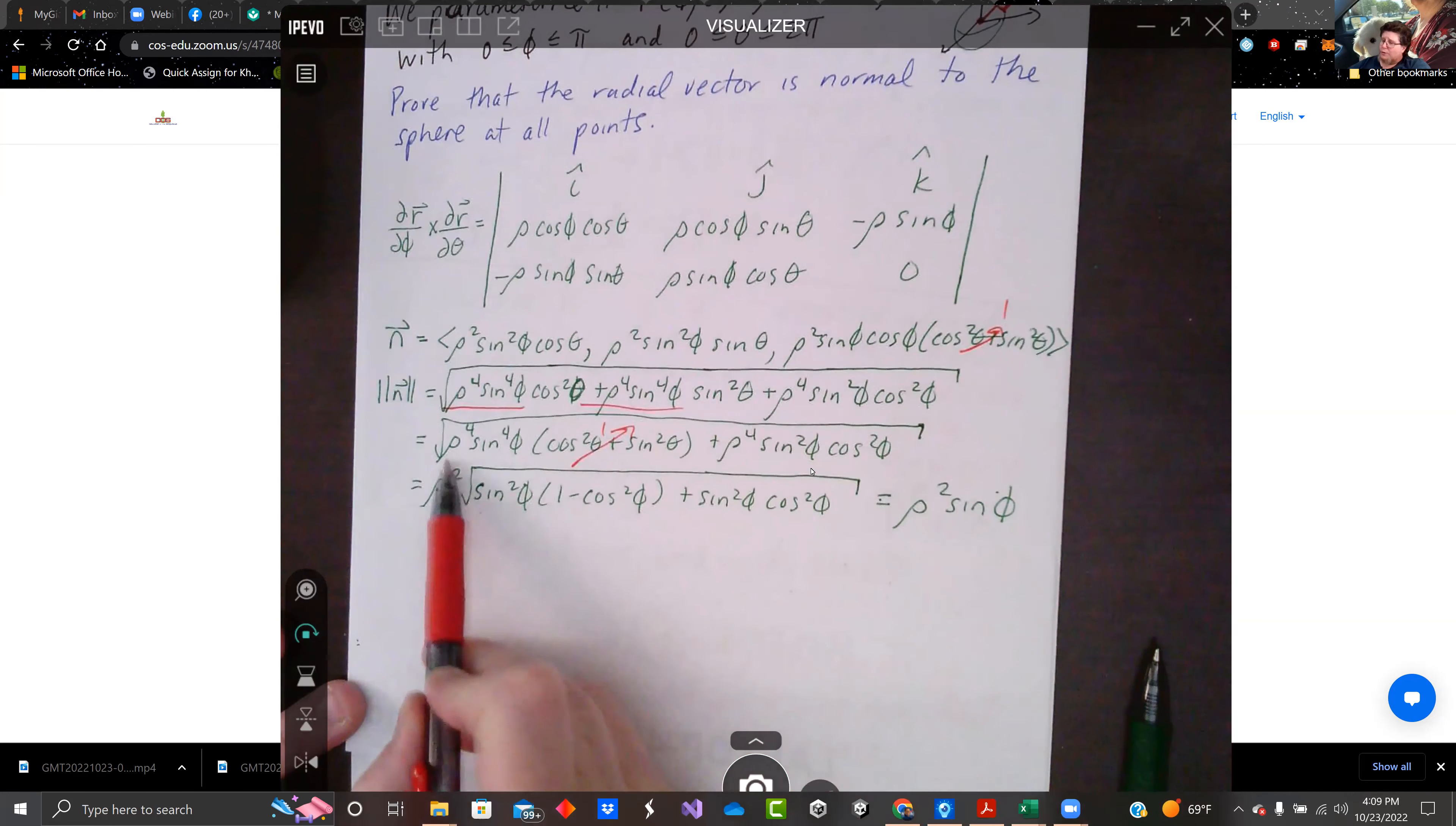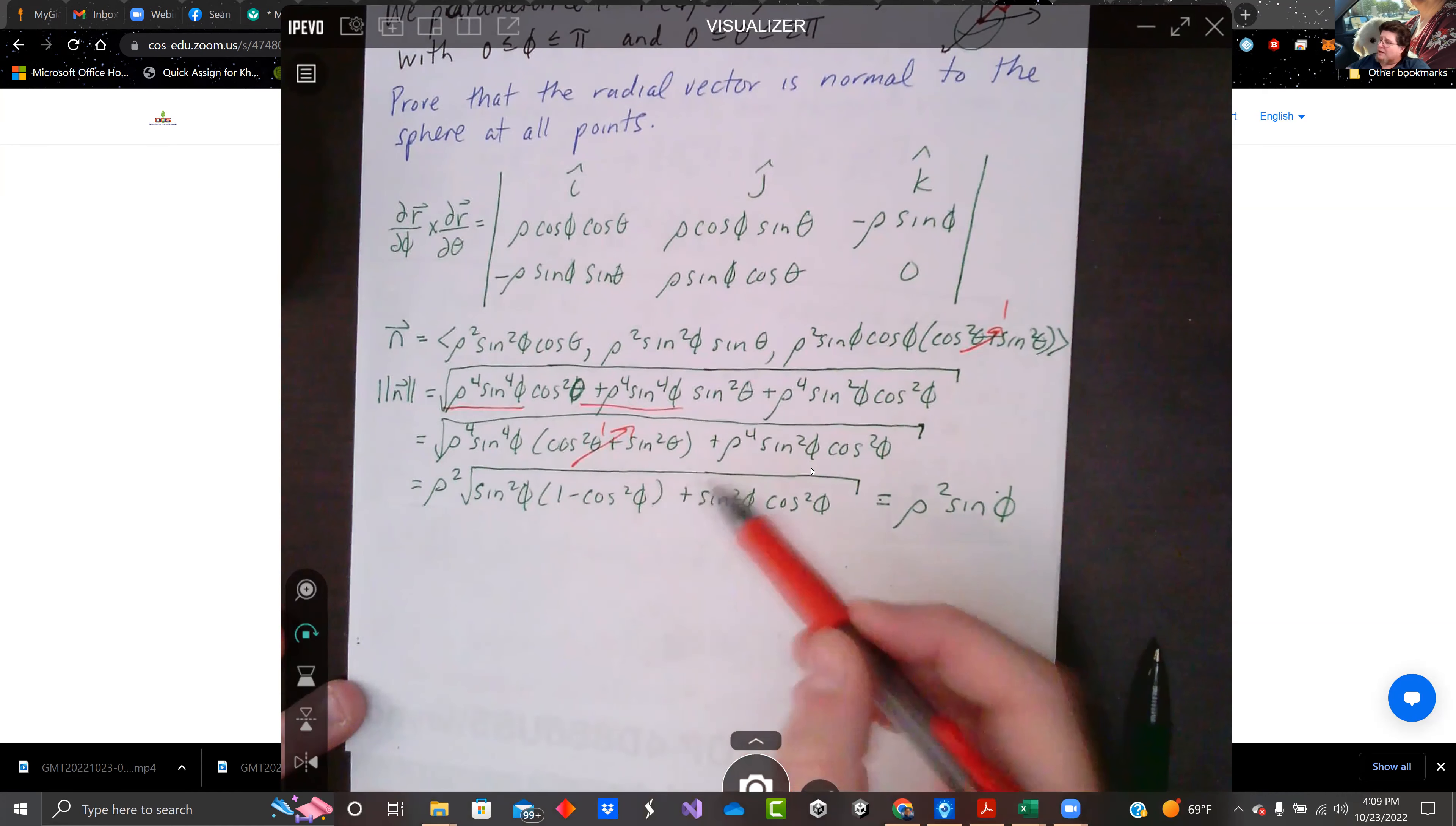Pulling the rho to the fourth sine phi to the fourth out of both of these leaves us cosine squared plus sine squared, which we can send to one. So then we're left with rho to the fourth sine to the fourth phi plus rho to the fourth sine squared phi cosine squared phi.